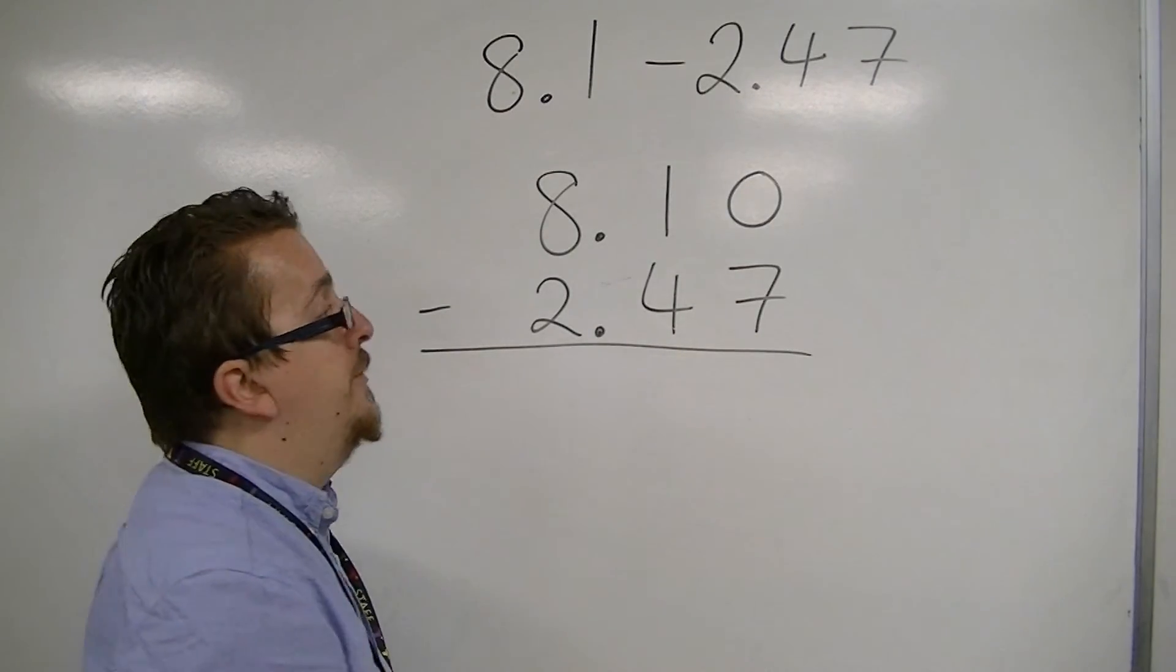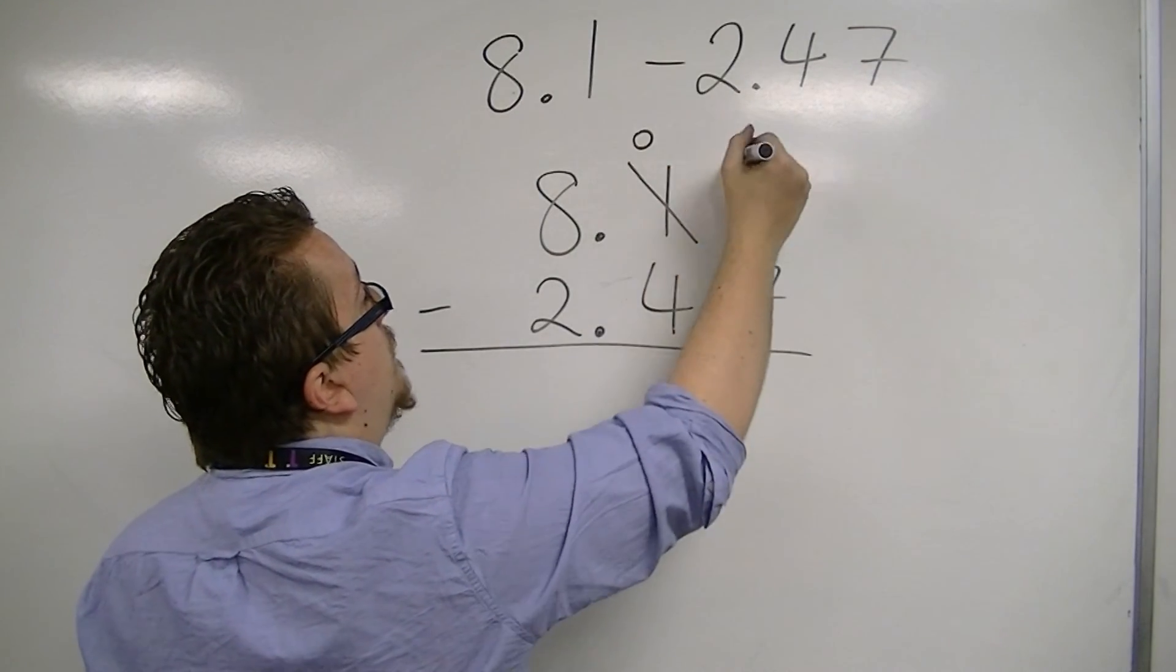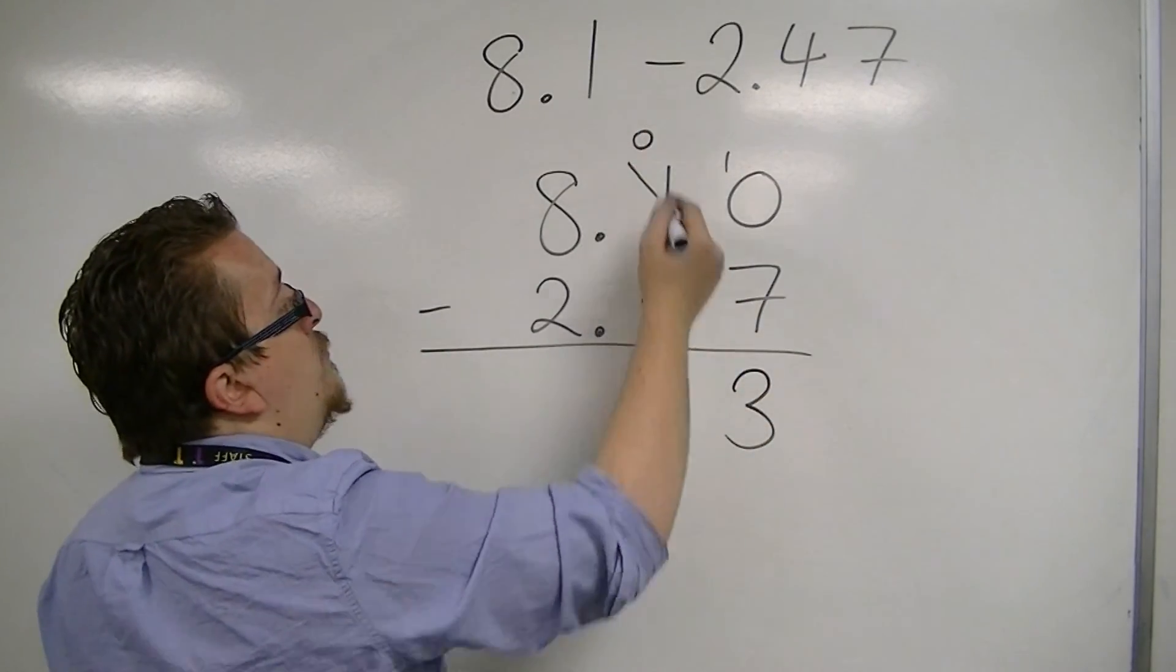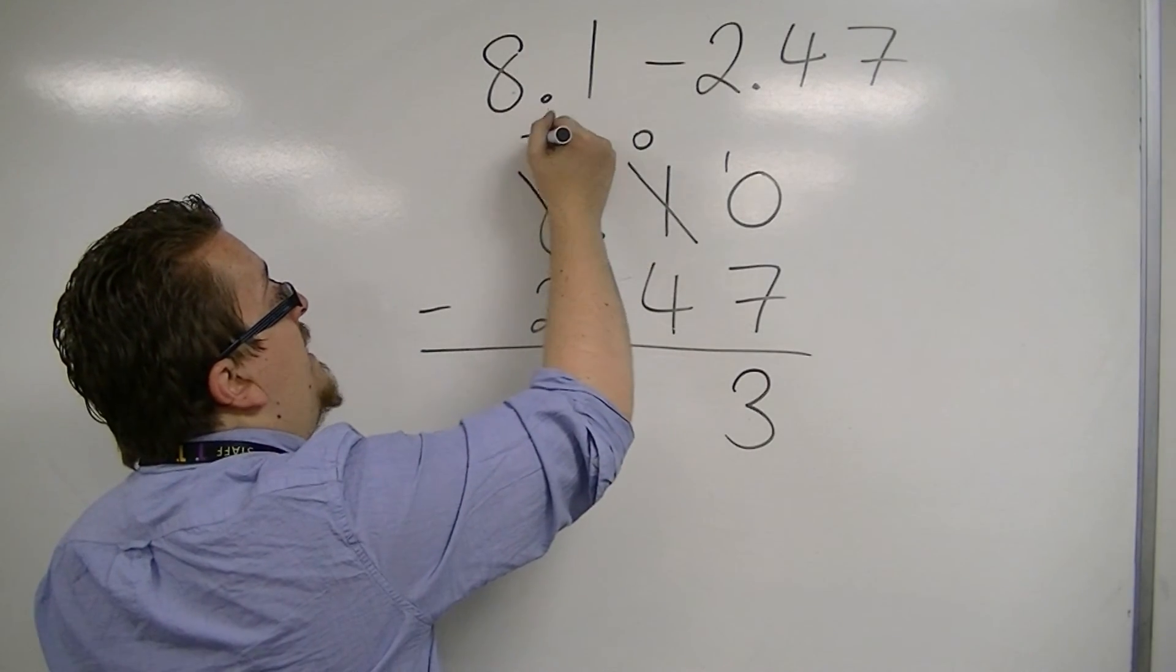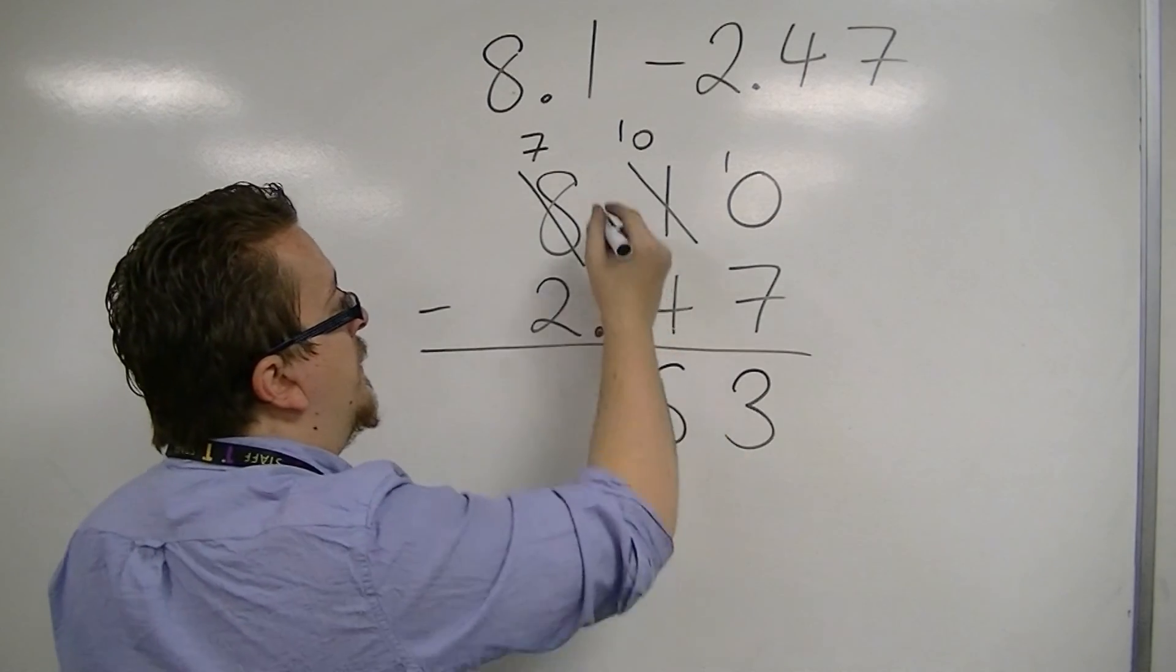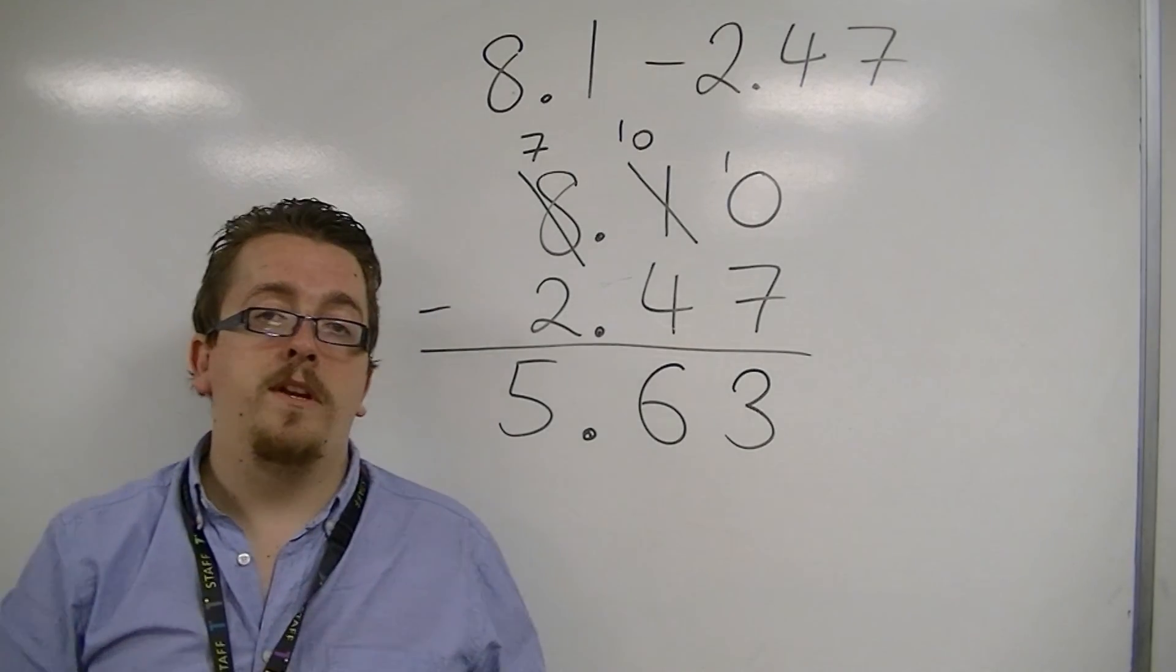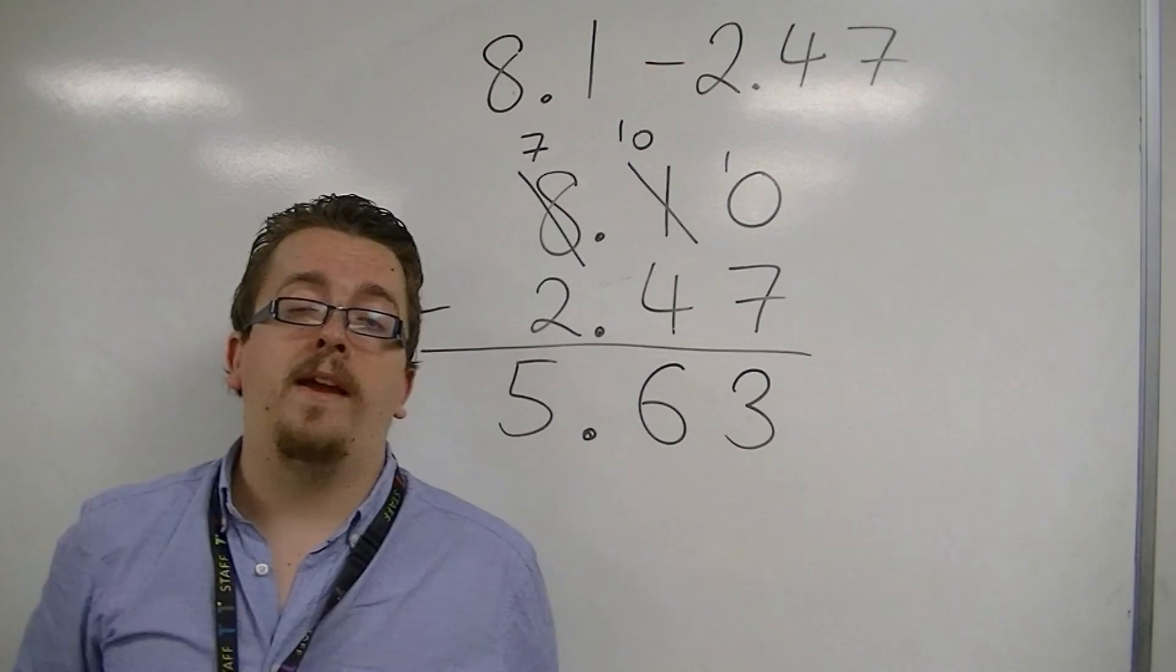0 take away 7 I can't do. We're going to have to borrow 1 from the 1. So the 1 now becomes 0, and the 1 appears here. 10 take away 7 is 3. I have 0 take away 4, which I can't do. Borrow 1 from the 8. 10 take away 4 is 6. The decimal point follows down. 7 take away 2 is 5. So I end up with 5.63. So this has been subtracting with whole numbers and decimals.